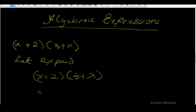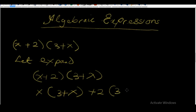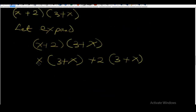Now let me show you. You take this x, bracket (3 + x), because it's going to multiply all the elements in this bracket. And plus this 2 is going to multiply all the elements in this bracket. So now we multiply: x times 3 is equal to 3x. x times x is equal to plus x squared.